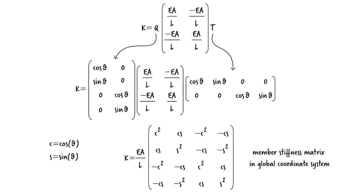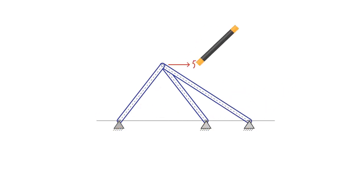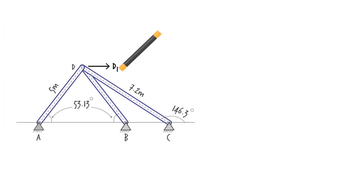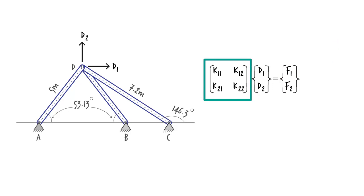Let's put this to use and analyze a simple indeterminate truss. Consider this three-bar truss. The structure has only two degrees of freedom. We can label them D1 and D2. Therefore, for the entire structure we can write. This is the system stiffness matrix and this is the vector of the joint loads.